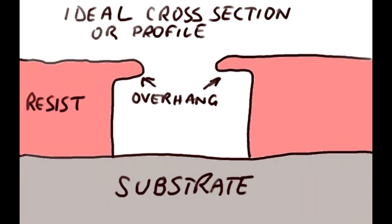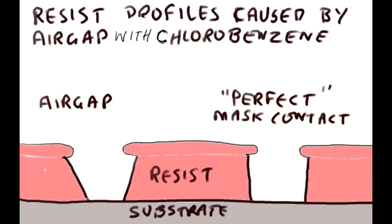You can see that there's an overhang. So you know the process: you soak it in, you bake the resist, soak in chlorobenzene, and rebake it. But where there is an air gap on the left, you'll get this kind of profile. Where you get much better or near perfect mask contact, the profile will be much more vertical and the overhang will be more effective. So it's important to remember that where there's an air gap.